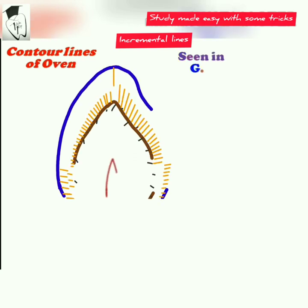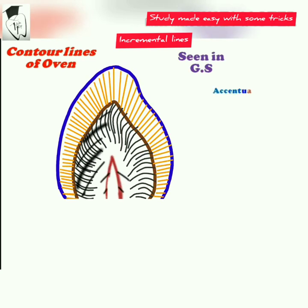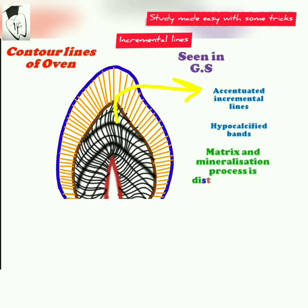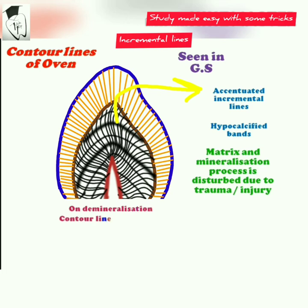Now, what are the contour lines of Owen? These are seen in ground sections and are accentuated incremental lines of Von Ebner. They are hypocalcified bands. When the matrix and mineralization process is disturbed due to trauma or injury, contour lines of Owen are produced. The coincidence of secondary curvatures may also produce the illusion of contour lines of Owen.